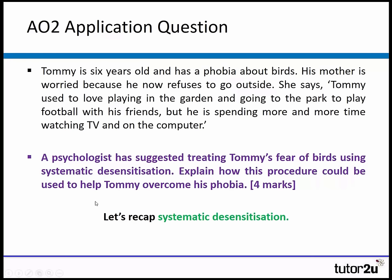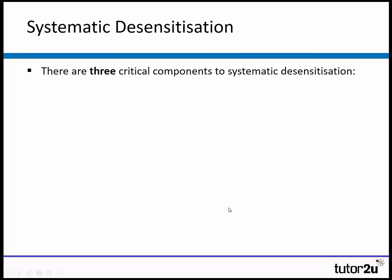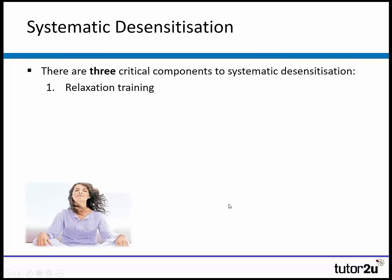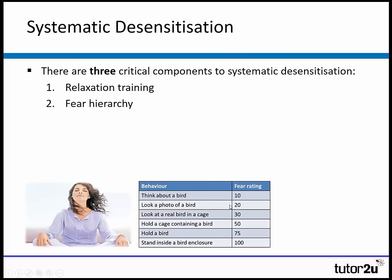It's worth recapping the key components of systematic desensitisation. There are three critical components. The first is relaxation training — we use breathing techniques to help the person relax when stressed or anxious. The second, really important, is building a fear hierarchy — we list the behaviours from least fearful to most fearful, trying to build up through different situations.